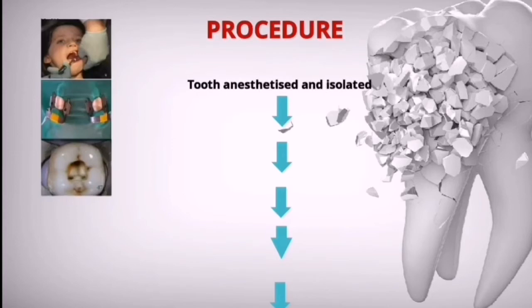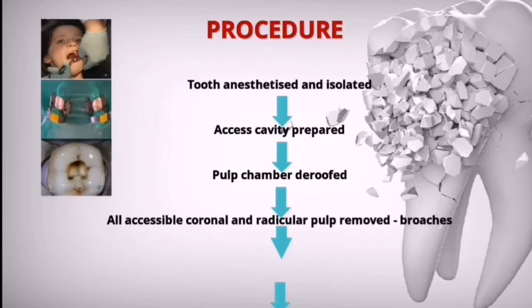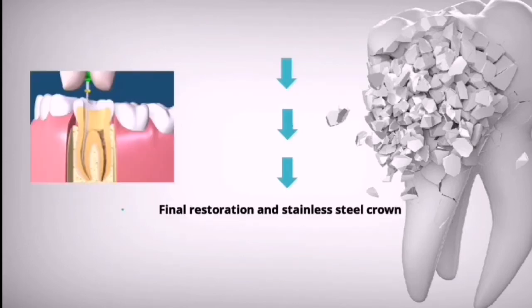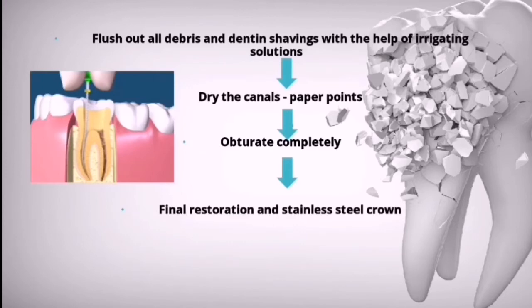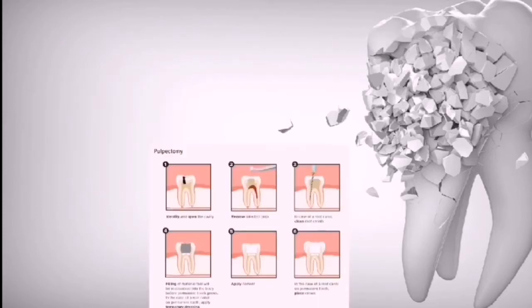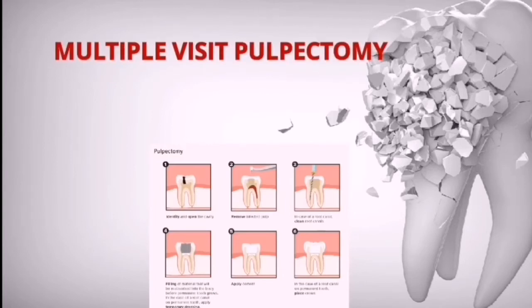The single-visit procedure: first, anesthetize and isolate the tooth, then prepare the access cavity. The pulp chamber is de-roofed, and all accessible coronal and radicular pulp is removed with broaches. Irrigate well with saline to flush out debris and dentin shavings. Dry the canals with paper points, then completely obturate and place a final restoration and stainless steel crown — all done in a single visit.